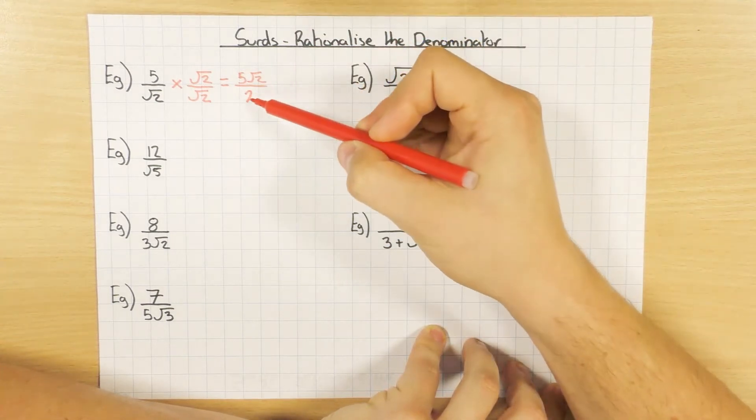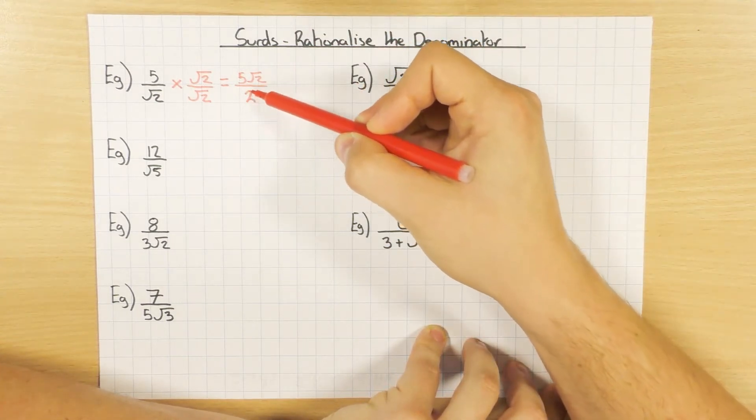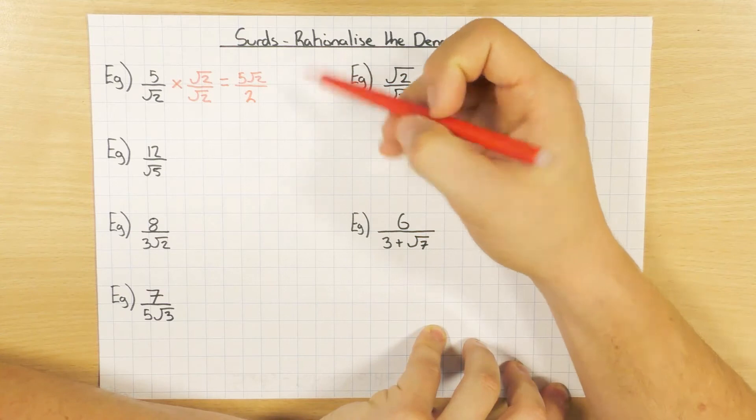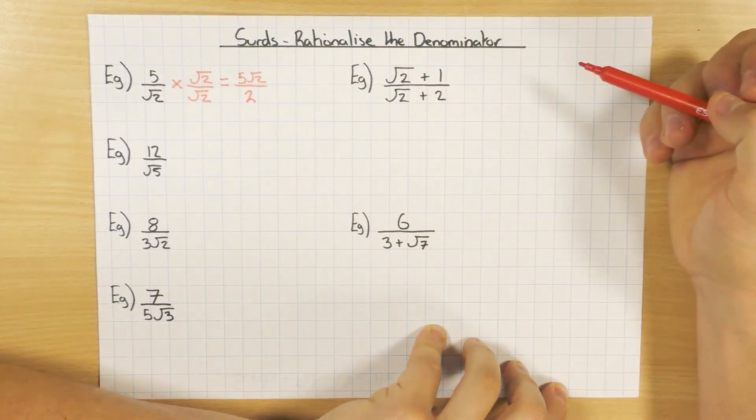So in this particular case, the denominator is now a nice whole number, it's now 2. Therefore I've rationalized the denominator.